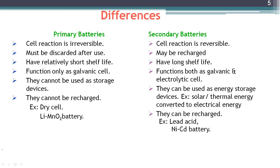The key differences between primary and secondary batteries: In a primary battery, the cell reaction is irreversible — the chemical reaction cannot be reversed by connecting to an external source of EMF. In a secondary battery, the cell reaction can be reversed. Primary batteries must be discarded after use, whereas secondary batteries can be recharged. Primary batteries have a relatively short shelf life.